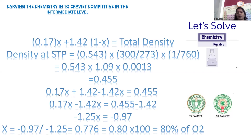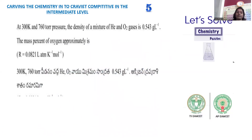Setting up: 0.17X + 1.42(1 − X) = 0.455. Expanding: 0.17X + 1.42 − 1.42X = 0.455, which gives −1.25X = −0.97, so X = 0.97/1.25 = 0.776 ≈ 0.80. This is the mole fraction of oxygen (the heavier gas). Converting mole fraction to mass percentage by multiplying by 100 gives 80% oxygen. For problem number 5, answer B is correct.